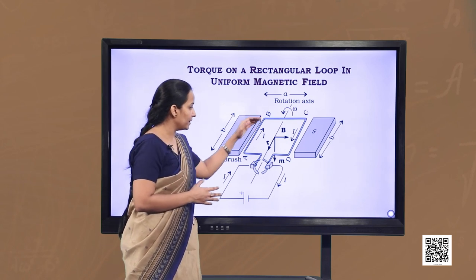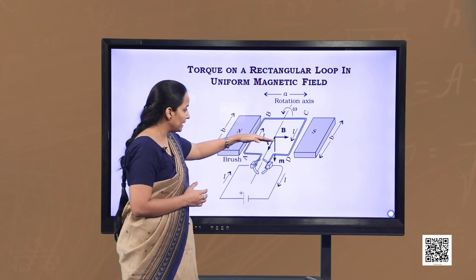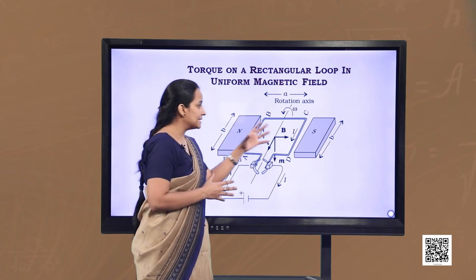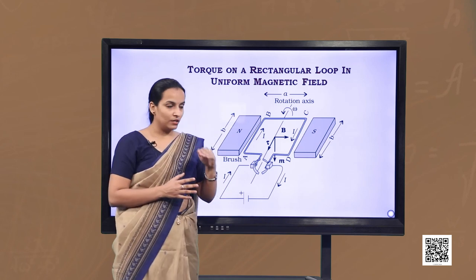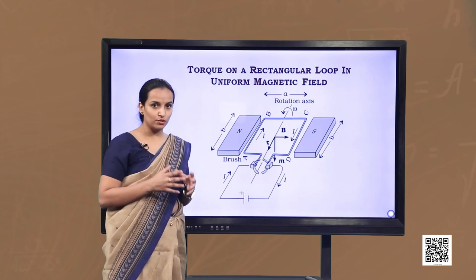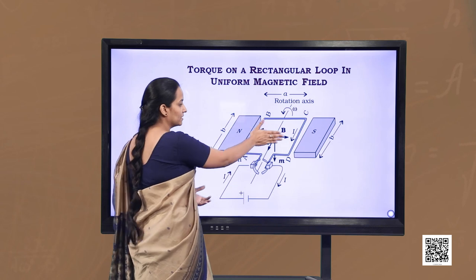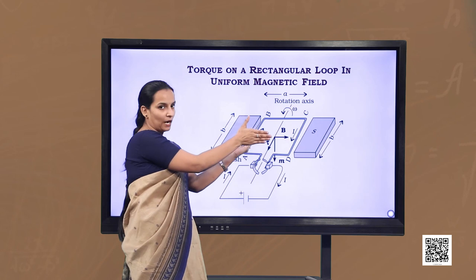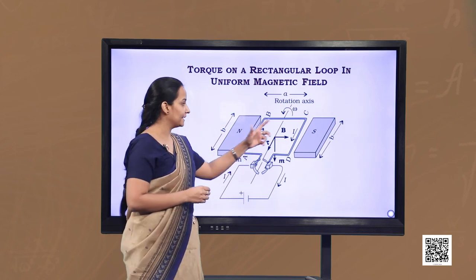If we talk about AB and CD, the current element of AB is perpendicular to the magnetic field, and the same is true for CD. To find the direction of force we use the right hand rule — aligning fingers in the direction of B and thumb in the direction of current, the perpendicular of the palm gives the direction of force, which is into the plane for AB.